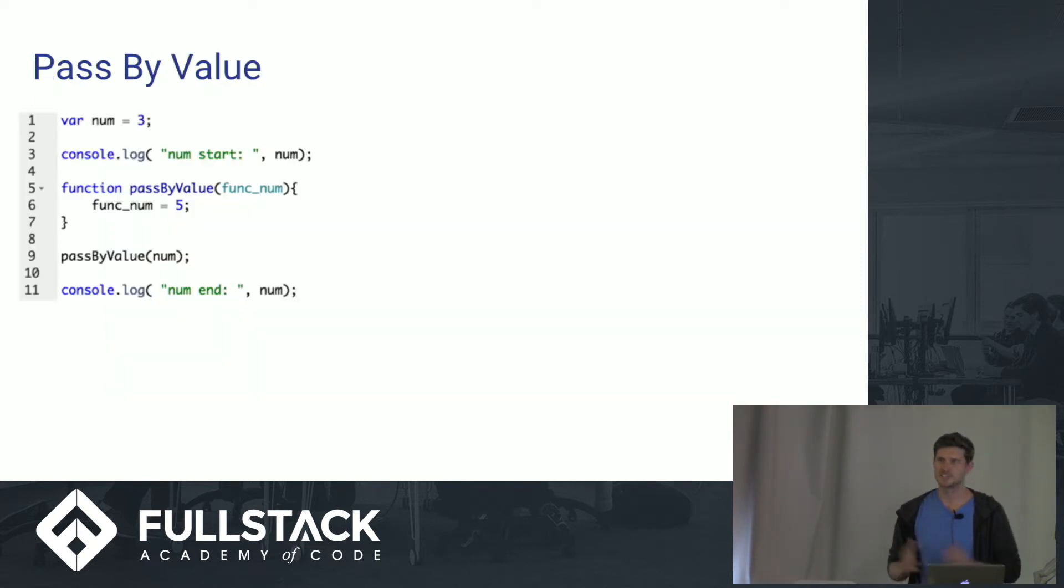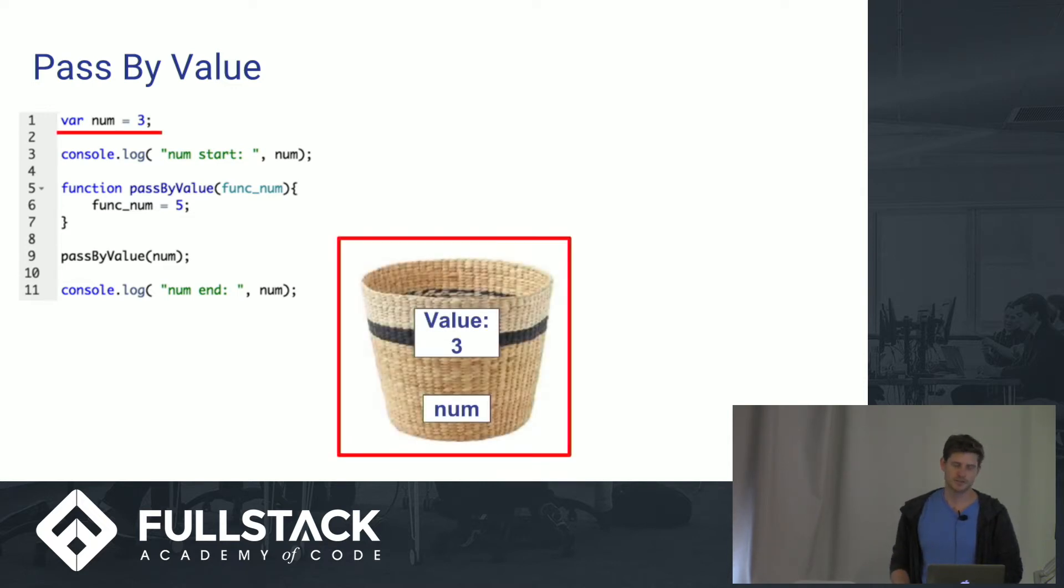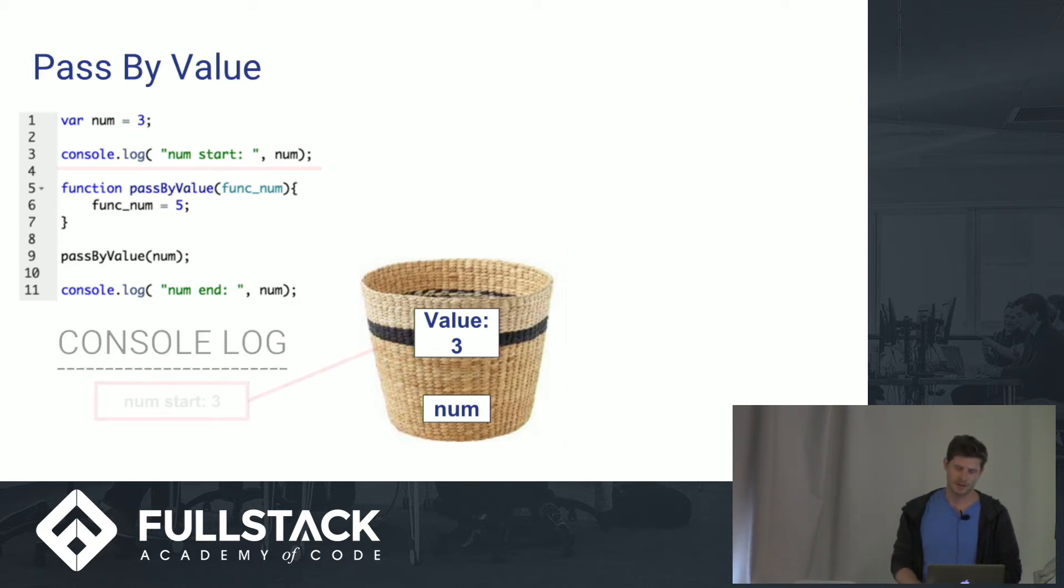So as I said before, I think most of you understood pass by value. But I'm just going to be going over this example to kind of lay the framework for how I'm going to be explaining the other two examples. So here to start, we're declaring a num and setting it equal to 3. And I'm using a basket here to represent that variable. Then we console log out what we've placed into our basket, which is 3. And you can see in the bottom left that we're outputting 3.